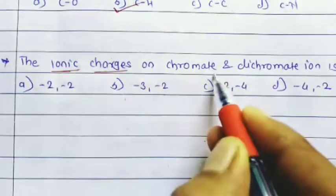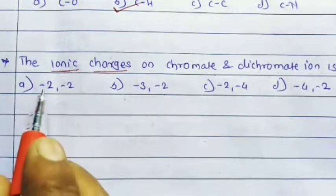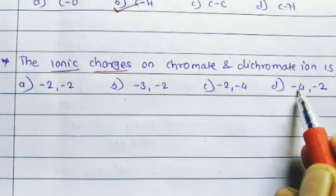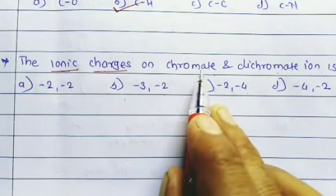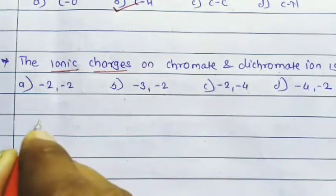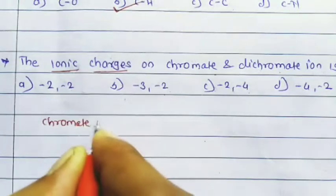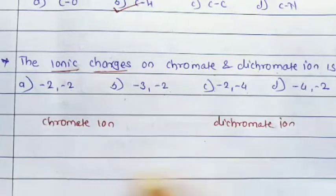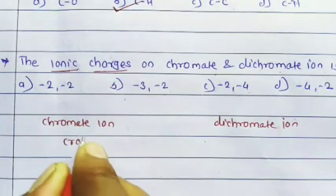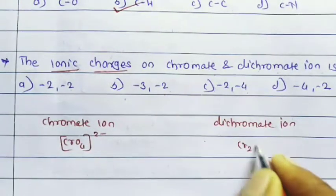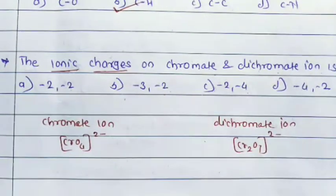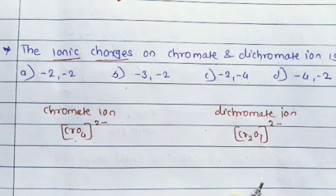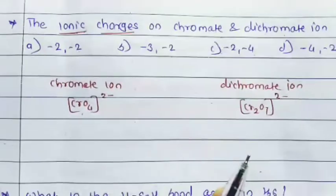The ionic charge on chromate (CrO₄²⁻) and dichromate (Cr₂O₇²⁻) ions. The options are: minus two and minus two, minus three and minus two, minus two and minus four, or minus four and minus two. The ionic charge is calculated using oxidation states.